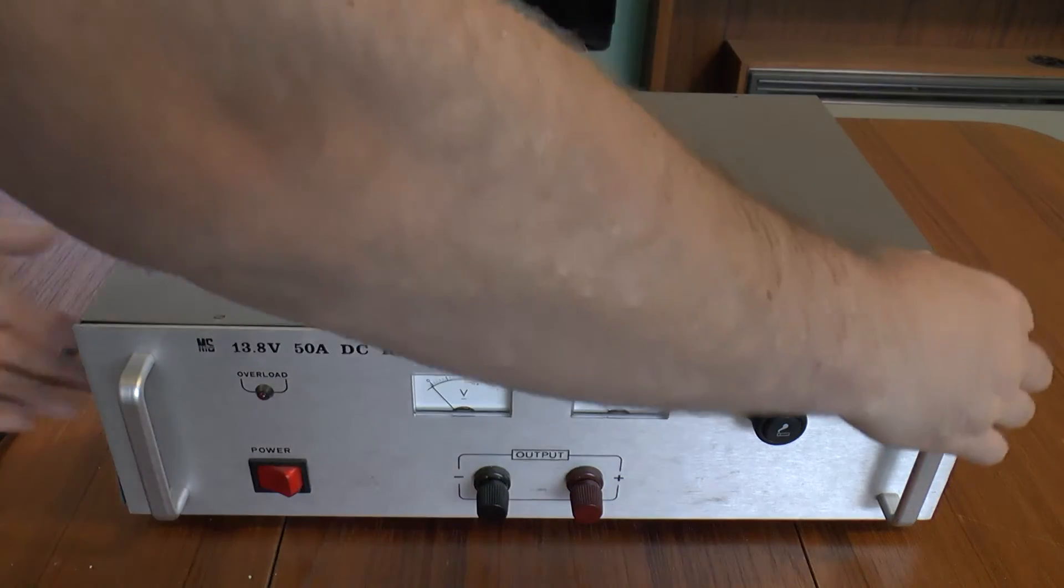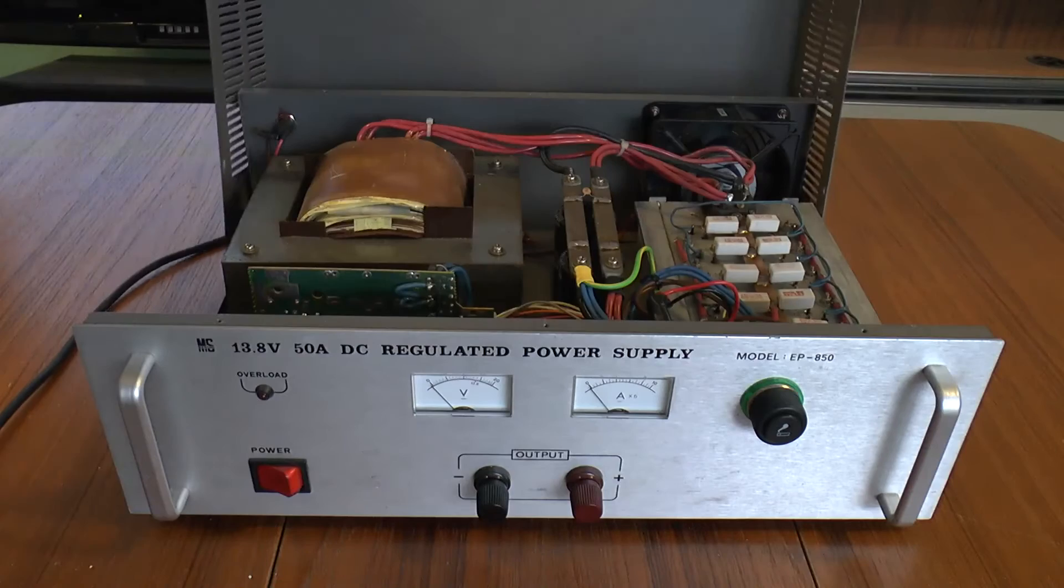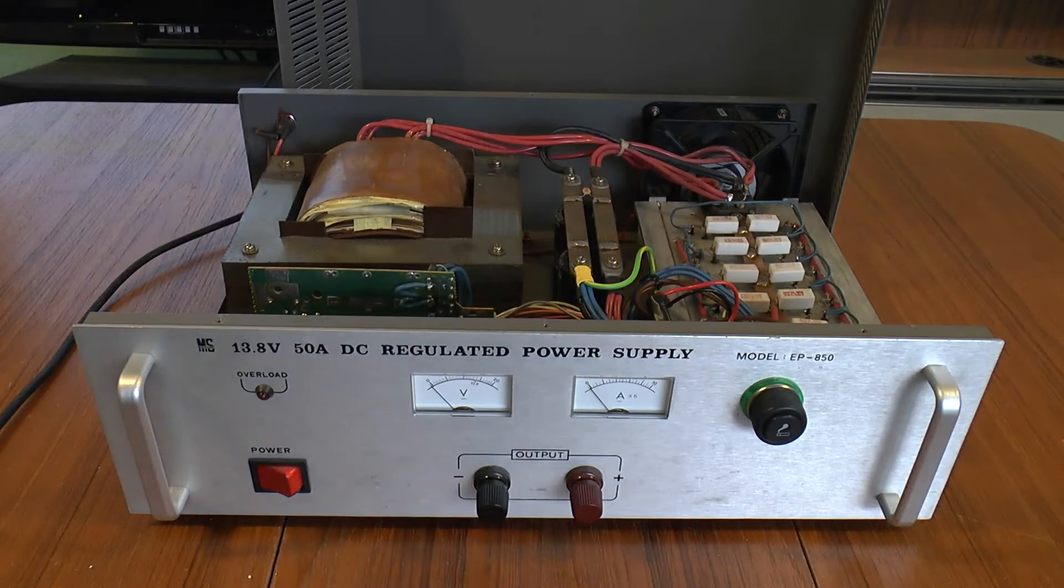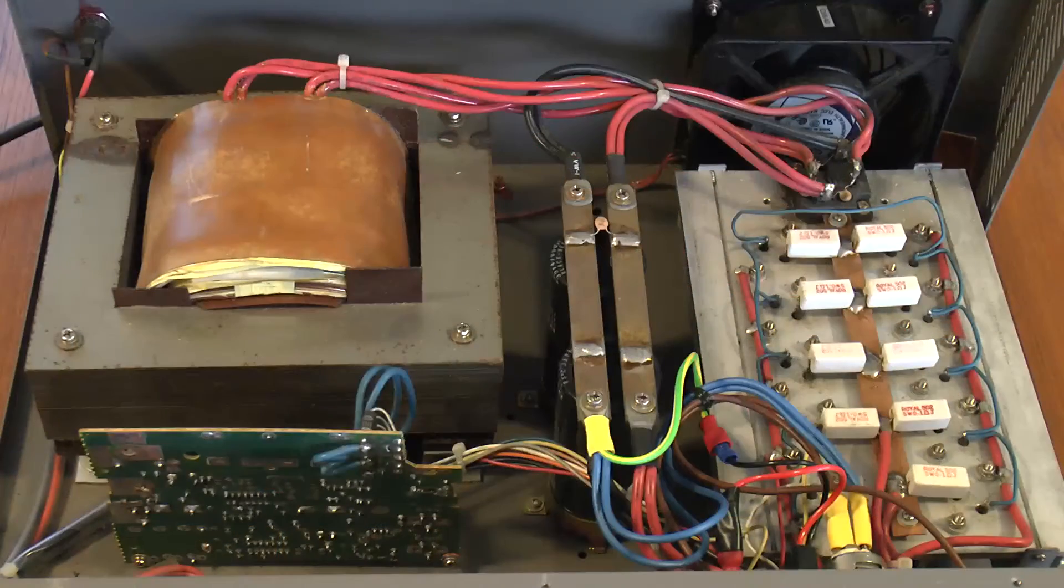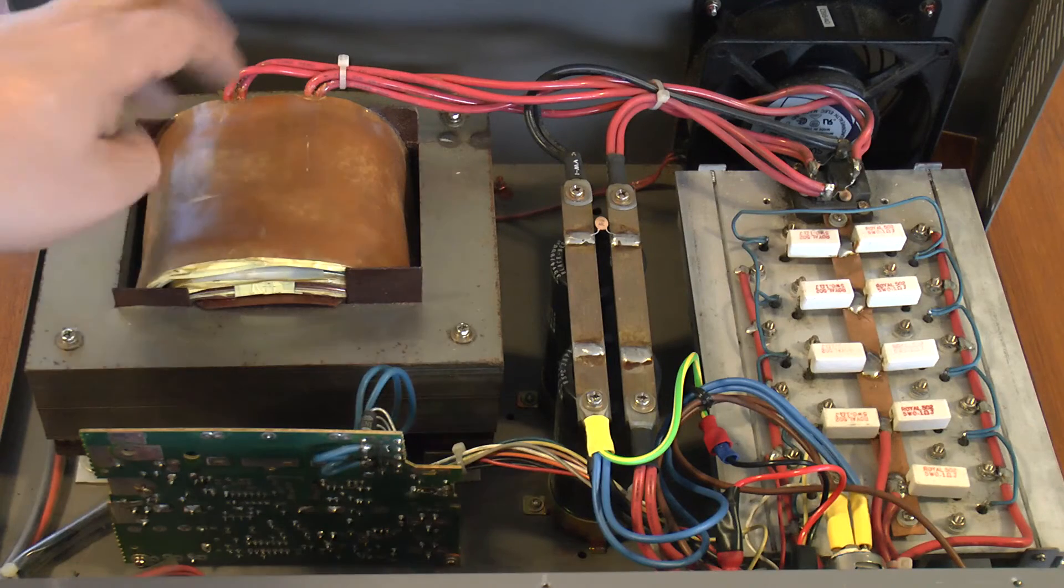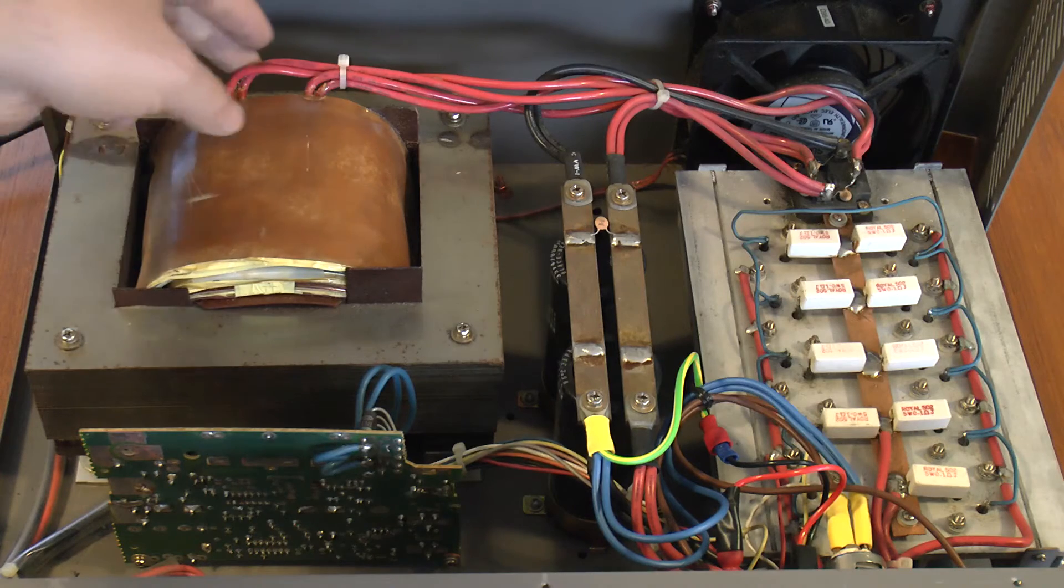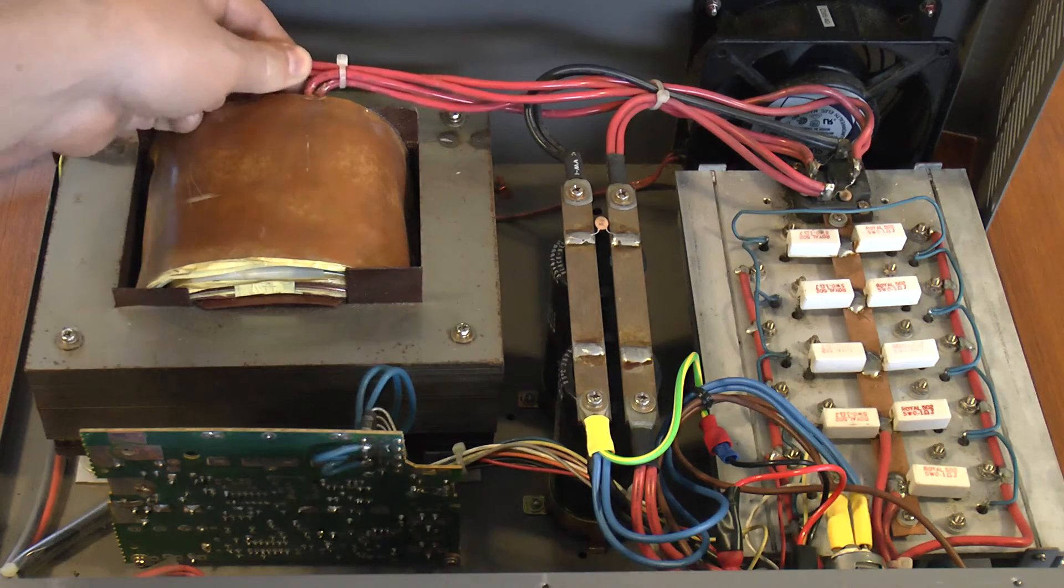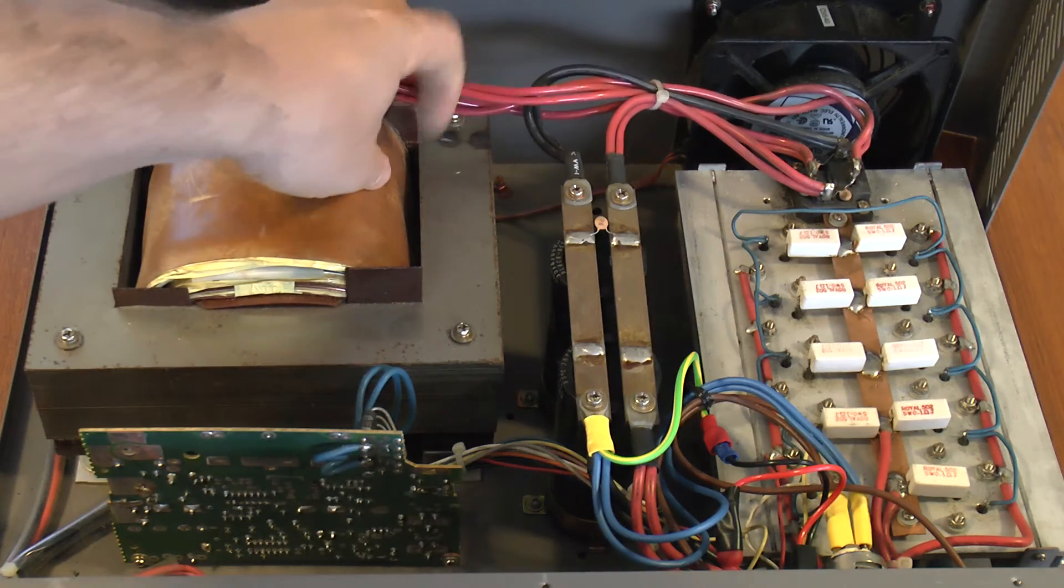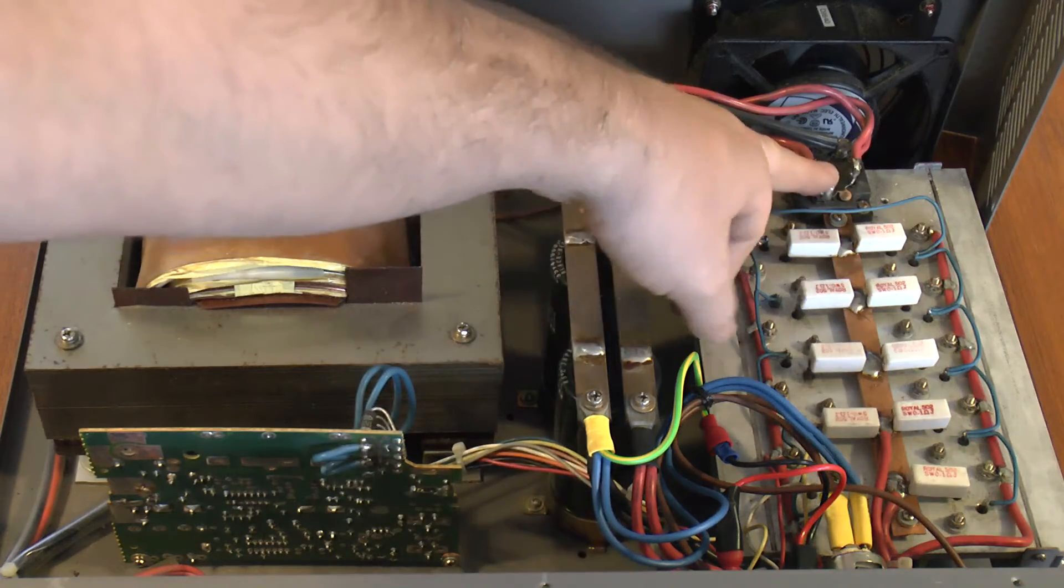As you can see, I've taken off all the screws. So that will come straight off. The first thing you notice, obviously, is this big transformer. In fact, this has two sets of outputs. You've got this doubled up winding here, which is the main power output, which goes to that bridge rectifier.